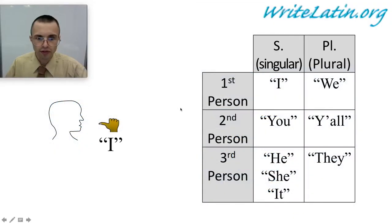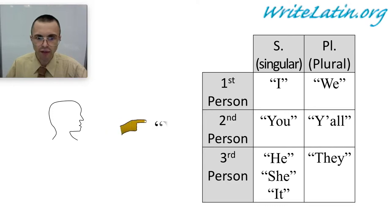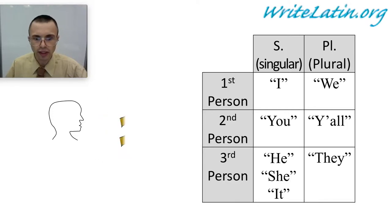Before we start, we need to review what these symbols mean. This means: I form, you, he, she, it, we, y'all, they.